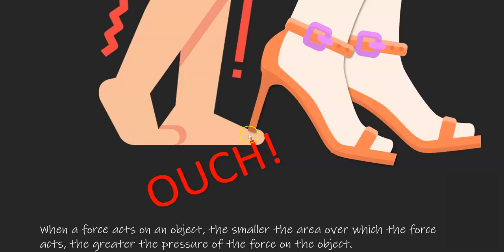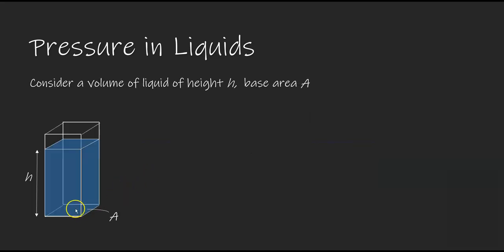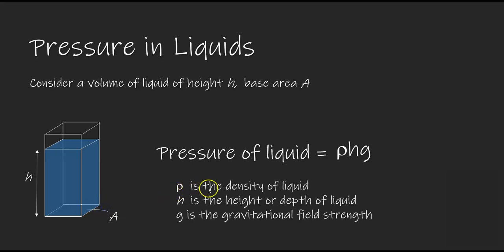Yet in school we learn that pressure in liquids is not dependent on the cross-sectional area of a container. It is only dependent on the density of the liquid, the height or depth of the liquid, and the gravitational field strength. Why is the pressure in liquid not dependent on the cross-sectional area of the container?